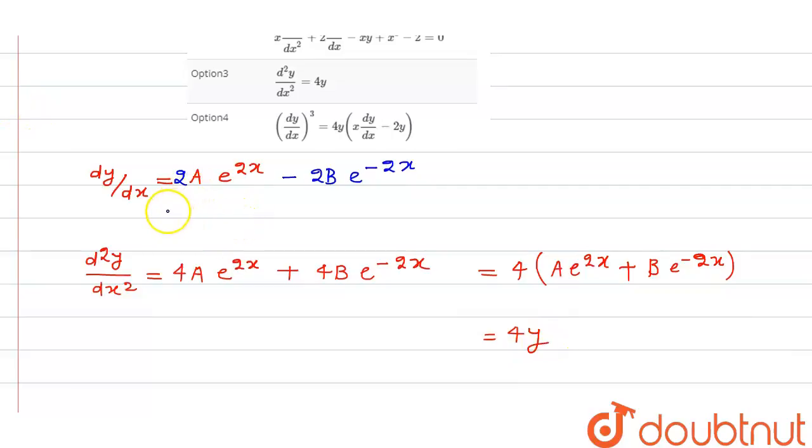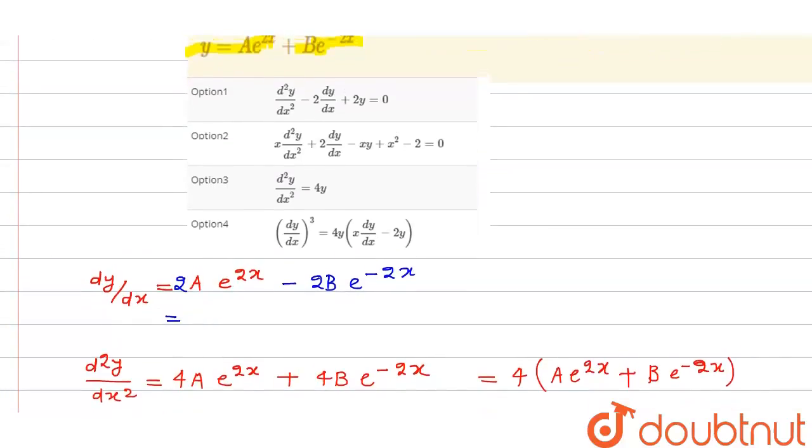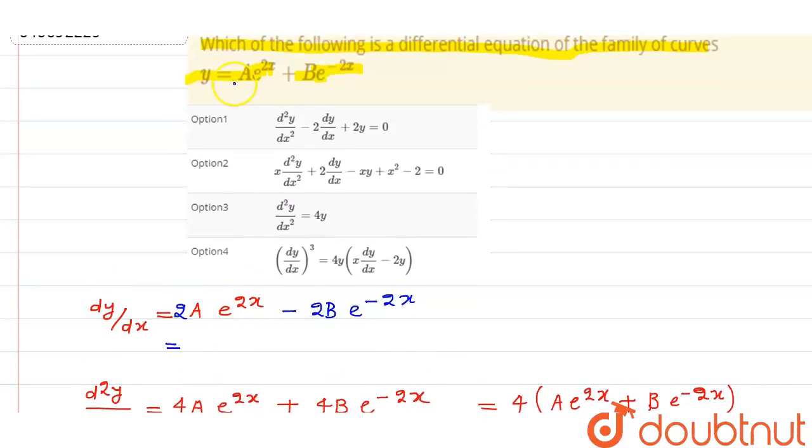If I am saying that this thing is, I can write this as y minus, if I am saying that a is y minus b e to the power 2x.